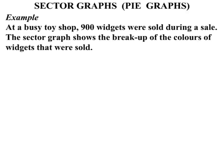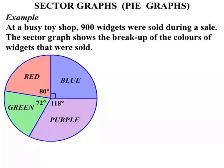In this lesson we do some work on sector graphs, otherwise known as pie graphs. Let's look at an example. At a busy toy shop, 900 widgets were sold during a sale. The sector graph shows the break-up of the colours of widgets that were sold. There's our sector graph, or pie graph.